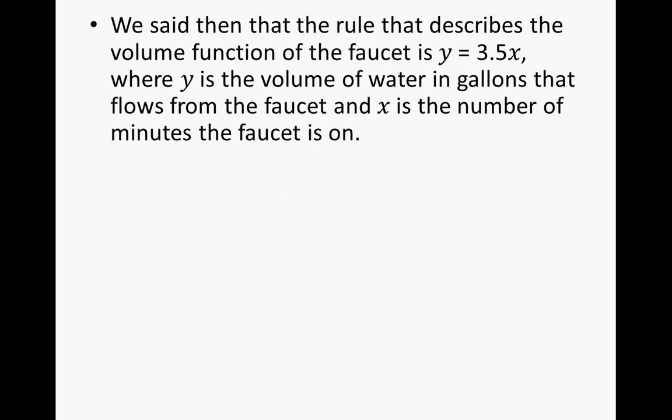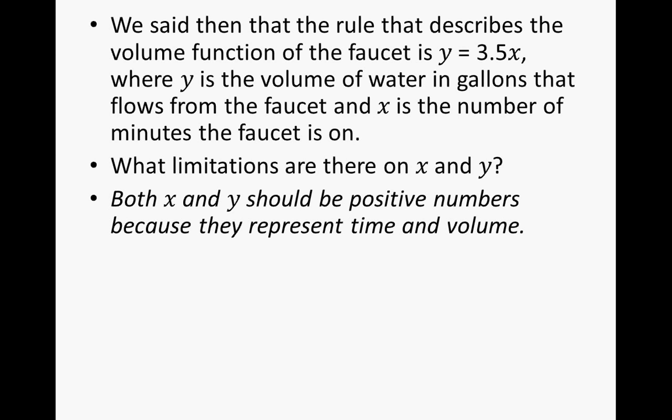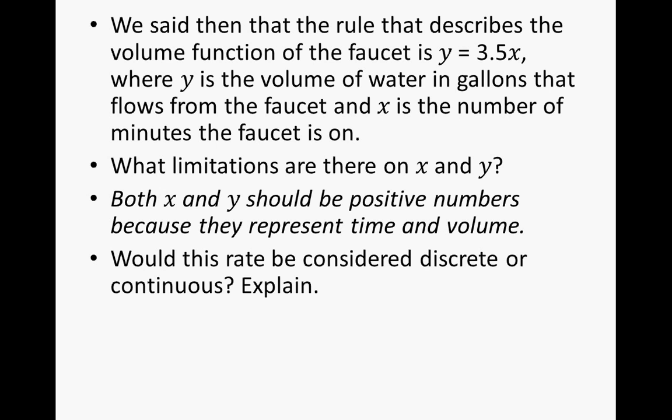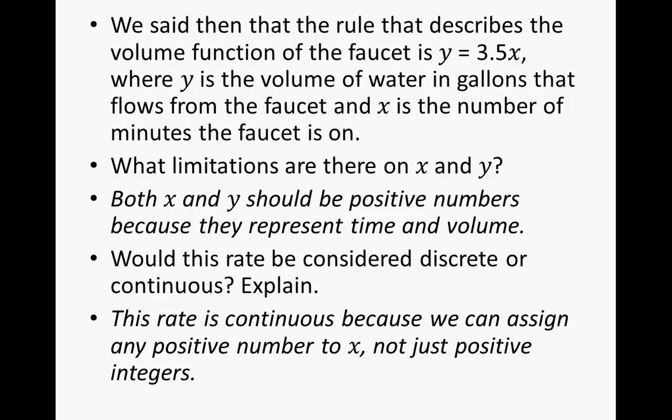We said then that the rule that describes the volume function of the faucet is y equals 3.5 times x, where y is the volume of the water in gallons that flows from the faucet, and x is the number of minutes the faucet is on. What limitations are on x and y? Well, both x and y should be positive numbers because they represent time and volume. Would this rate be considered discrete or continuous? This rate is continuous because we can assign any positive number to x, not just positive integers.